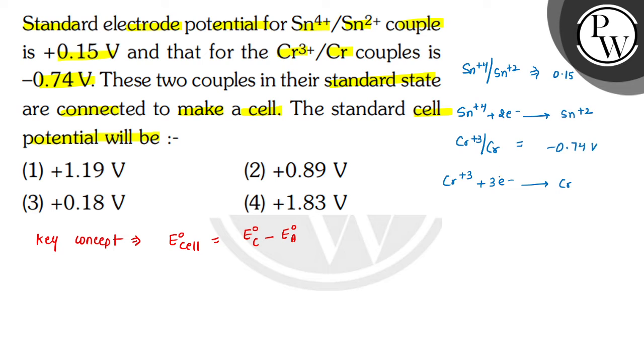We can write that E⁰cell equals E⁰cathode minus E⁰anode. Cathode is where reduction takes place and anode is where oxidation takes place. The question says these two couples are in their standard state and are connected to make a cell.